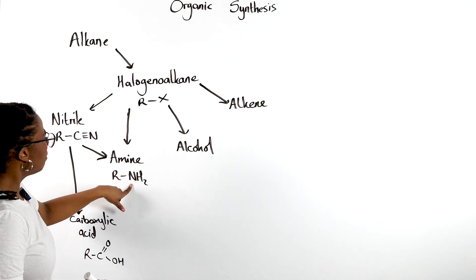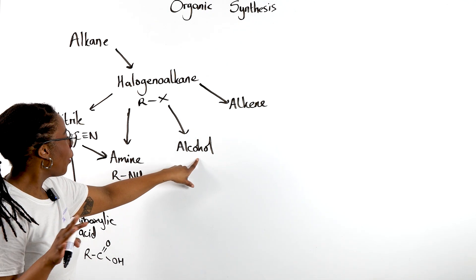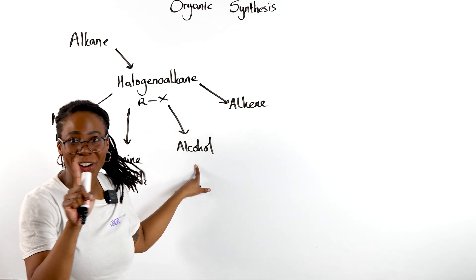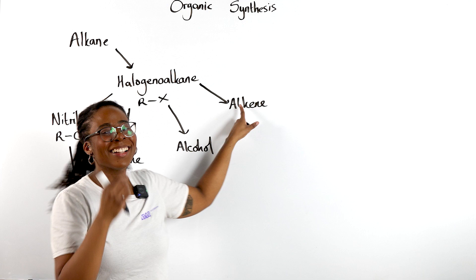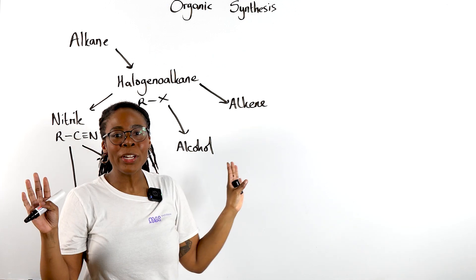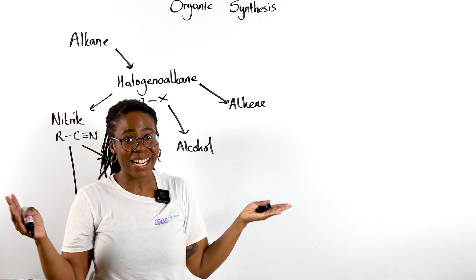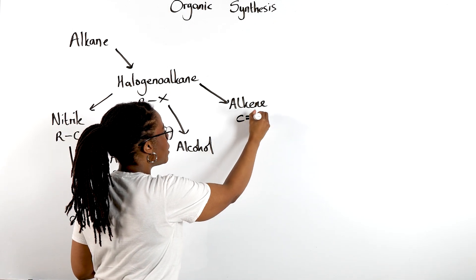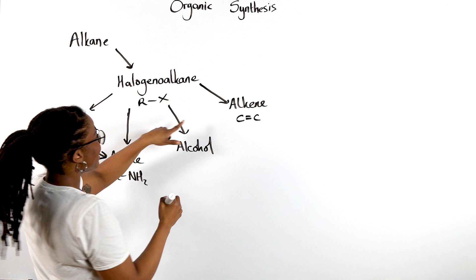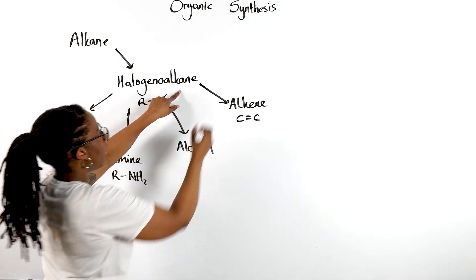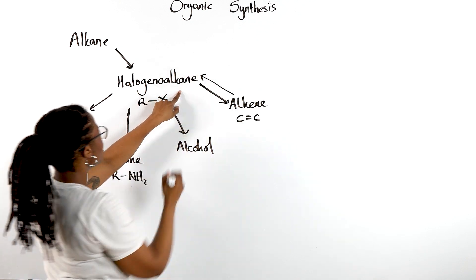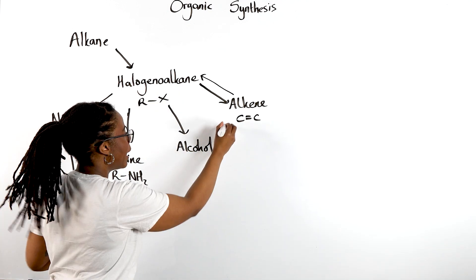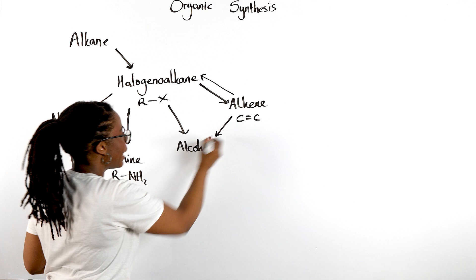From an alcohol, we can carry out an elimination or dehydration reaction to turn it into an alkene. Now, for alkenes, the only mechanism we know is electrophilic addition — so we're just adding across the carbon-carbon double bond. We can either add HBr to give us back our halogenoalkane, or add sulfuric acid then water to turn that alkene into an alcohol.